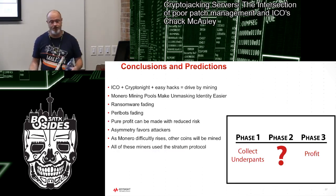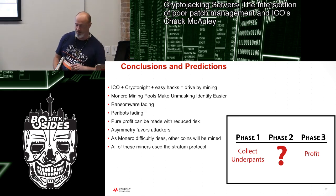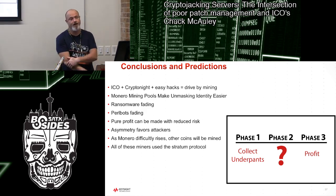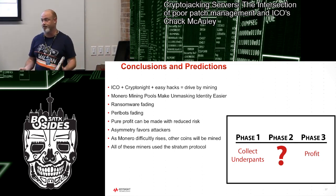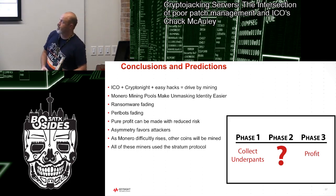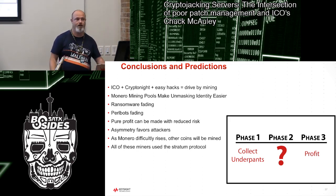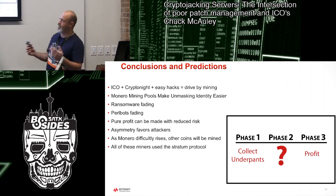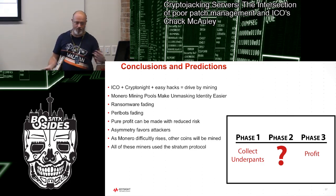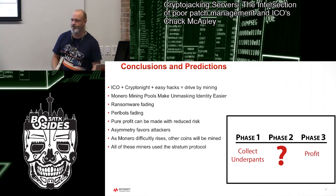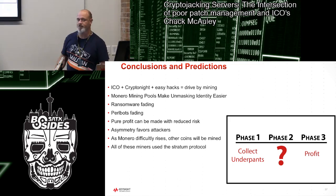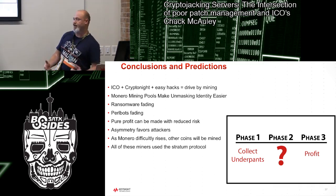My conclusions: ICOs and CryptoNight-based cryptocurrencies plus easy hacks equal drive-by mining — that's basically the formula. You're going to launch an ICO or have established coins like Monero, and people are going to try to make money off your computer if they can get on. The mining pools, by allowing you to plug in the address, make it very easy to unmask what the impact of a campaign has been. I didn't have to extrapolate — it was just there: here's how much you made. Ransomware does seem to be fading in this space.